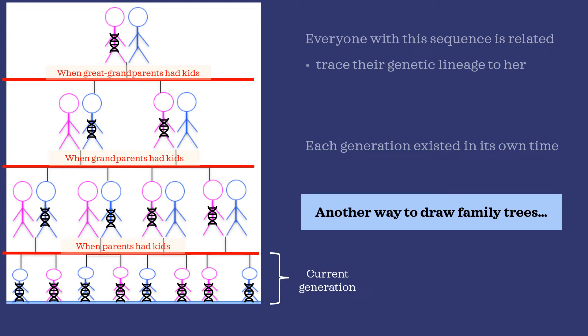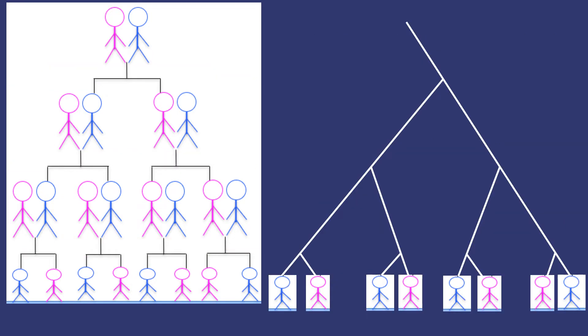Next, let's look at another way to draw family trees. These two trees display the same information. The new type of tree on the right looks like a branching root system.